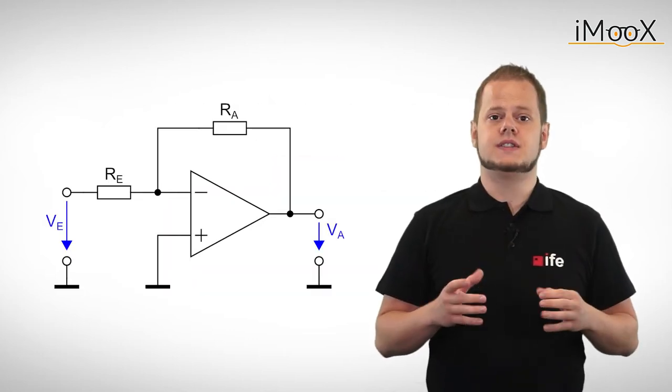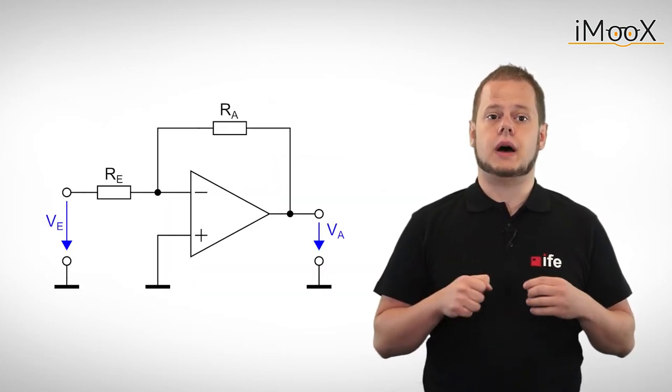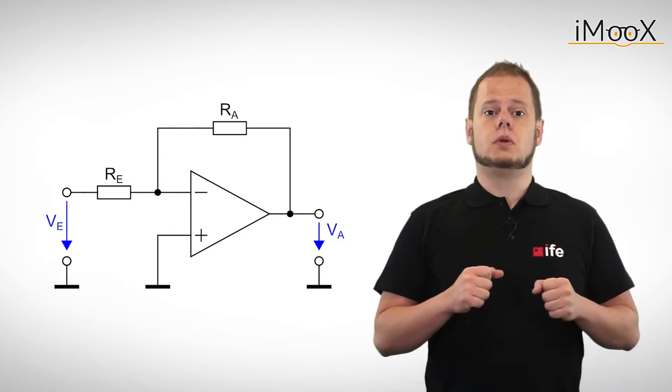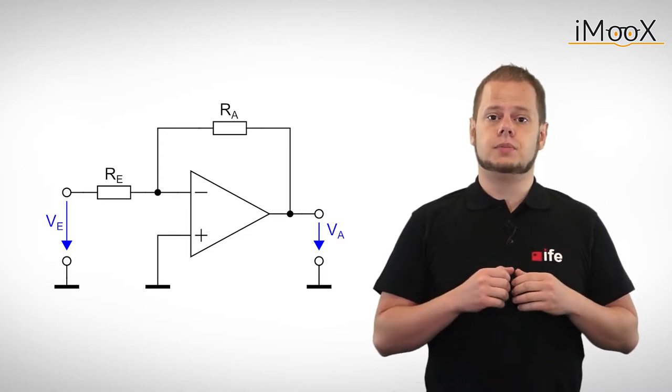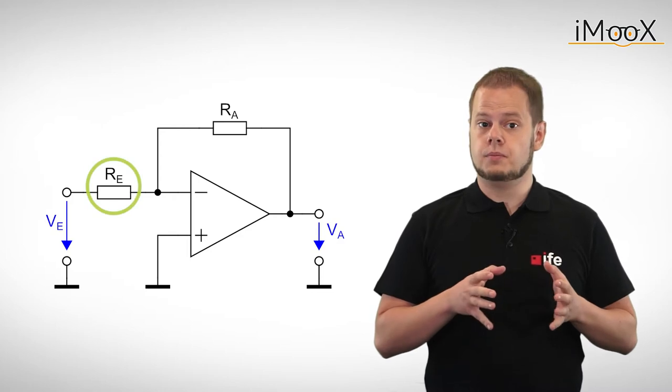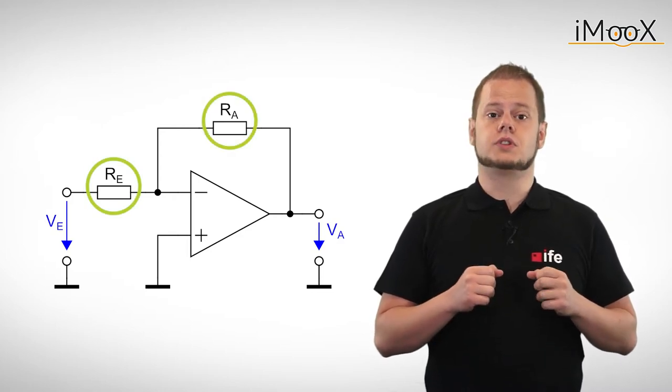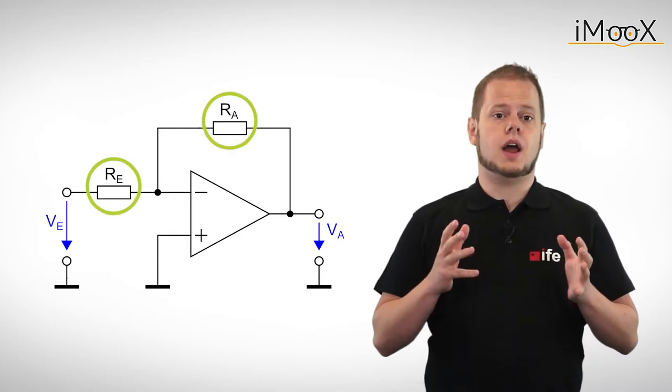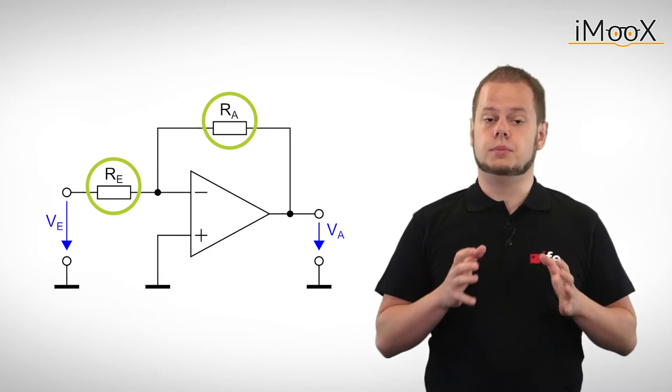The inverting amplifier is the counterpart of the circuit we talked about last time. The input voltage is applied to the inverting input via the resistor R1. At the same time R2 forms a negative feedback loop by applying a fraction of the output voltage to the inverting input.